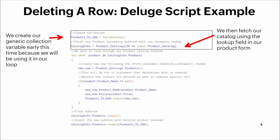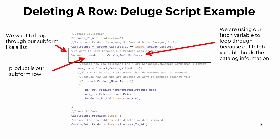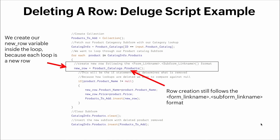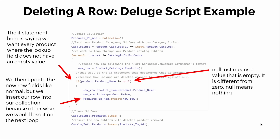We create our generic collection variable early because we'll use it in our loop. We then fetch our catalog using the lookup field in our product form, and loop through our subform like a list. The fetch variable holds the catalog information, so we use it to loop through. We create our new_row variable inside the loop because each iteration is a new row. Row creation still follows the format form_link_name.subform_link_name. The if statement selects every product where the lookup field does not have an empty value. We then update the new row fields and insert the row into our collection — otherwise we'd lose it on the next loop.